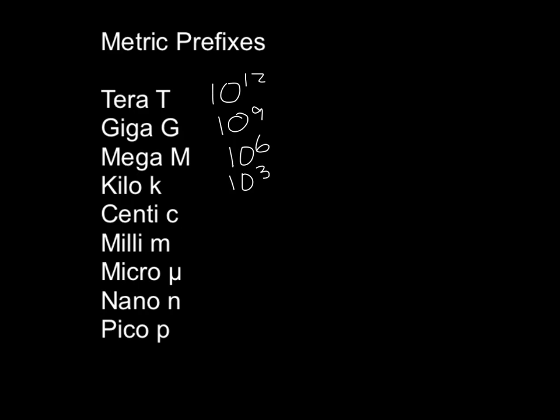Kilo is 10 to the 3rd. Centi doesn't follow the pattern, but we use centimeters so often that we're going to go ahead and talk about them. Centi is 10 to the minus 2, and then we start up with a pattern again. Milli, 10 to the minus 3. Micro, 10 to the minus 6. Nano, 10 to the minus 9. And Pico, 10 to the minus 12. So we're going from 10 to the positive 12 at the top to 10 to the negative 12 down here at the bottom.